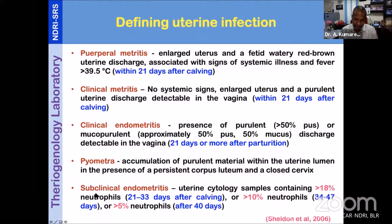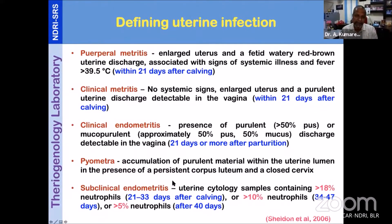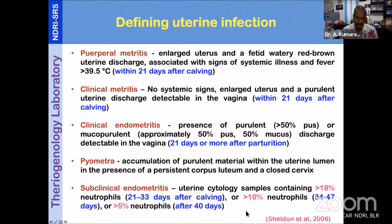Most important is subclinical endometritis, which is the major concern of the dairy industry. It is diagnosed mainly based on uterine cytology — samples containing more than 18% neutrophils at 21 to 33 days after calving, or 10% neutrophils or more between 34 to 47 days, or more than 5% even after 40 days. Having understood these, these are all the different types and classifications of uterine infection.